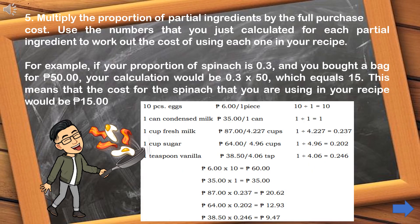Step number 5: Multiply the proportion of partial ingredients by the full purchase cost. Use the numbers that you just calculated for each partial ingredient to work out the cost of the portion used in the recipe.